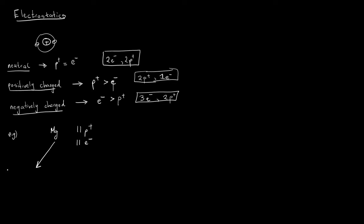To make it positively charged, we need to remove electrons. For any atom to become positively charged, you remove electrons. If we remove 3 electrons from those 11, we remain with 11 protons and 8 electrons. There are now more protons than electrons, hence it is positively charged.